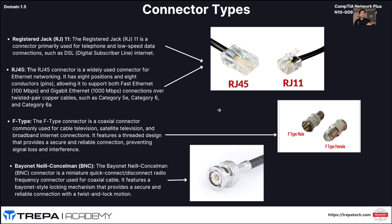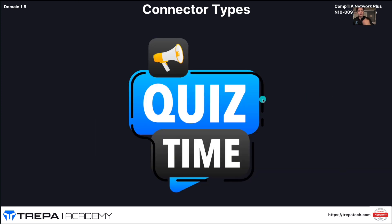The F-type connector is a coaxial connector commonly used for cable television, satellite television, and broadband internet — what you see at home with RG6 and RG11 cables. The BNC connector is also for coax and features a locking mechanism for quick connect/disconnect. BNCs are widely used in radio communications — I used them frequently in the Army — while F-type is common for small office/home office broadband connections.